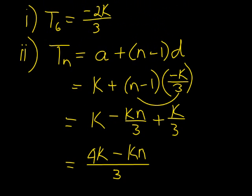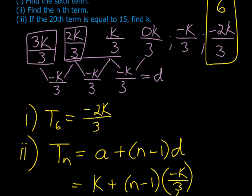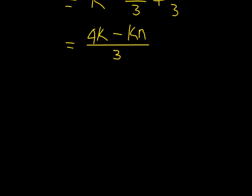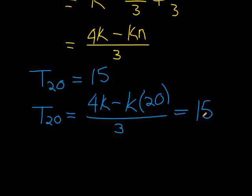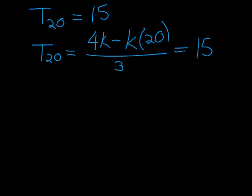Let's look at the final question. If the 20th term is equal to 15, find k. So they tell me the 20th term is equal to 15, so I know t20 is equal to 15, and we must find k. Now, t20, if I were to use my formula, I would get 4k minus k times 20 divided by 3. That's what I'll get if I use my formula. Now, that answer must equal 15, because when I substitute n equals 20, the 20th term, my answer should be 15, and I must find k.